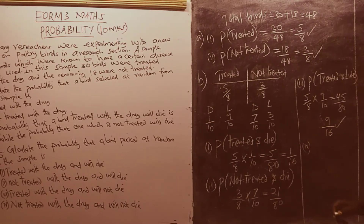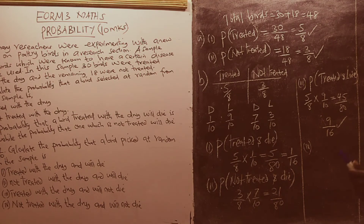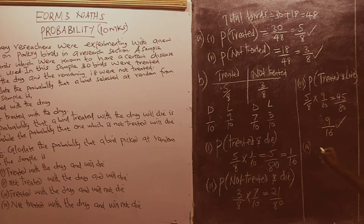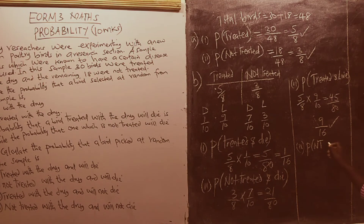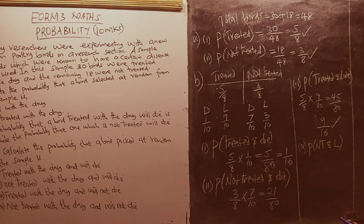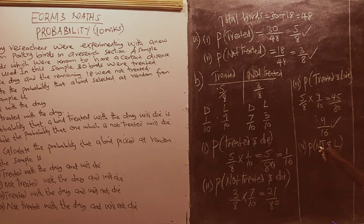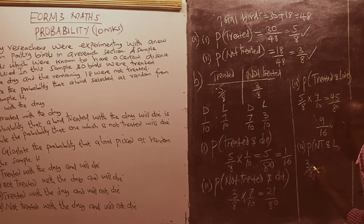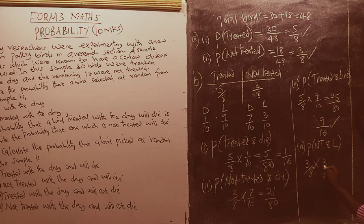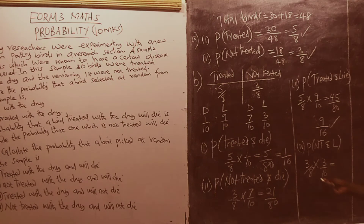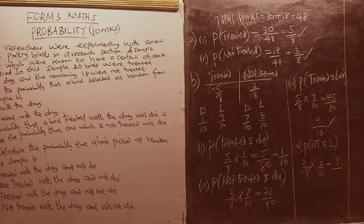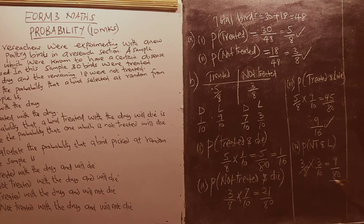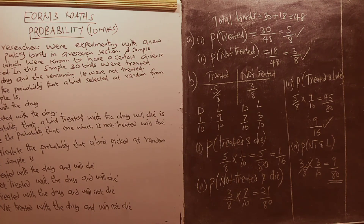Roman numeral 4: the probability that the bird is not treated with the drug and will not die. The probability of not treated is 3 over 8, and not dying means living, which is 3 out of 10. Multiplying the numerators: 3 times 3 gives 9; multiplying the denominators: 8 times 10 gives 80. So the answer to Roman numeral 4 is 9 over 80.